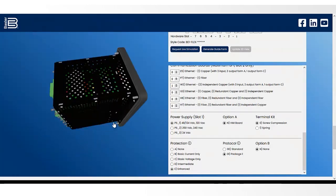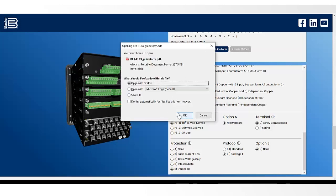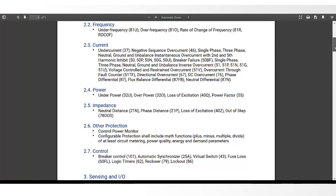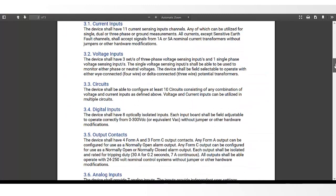Based on your completed configuration, you can generate a product-specific guide form specification and download it immediately. This provides the exact details you will need to incorporate the BE-1 Flex into the system specifications and to confirm your project requirements are met.